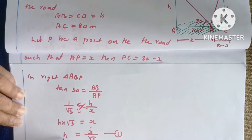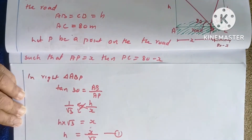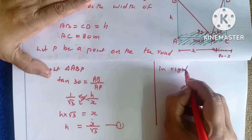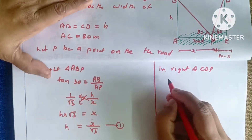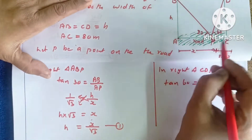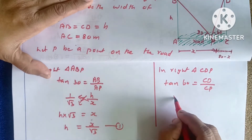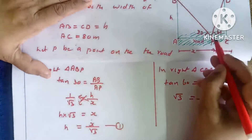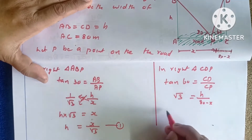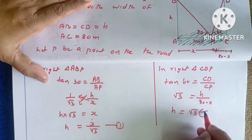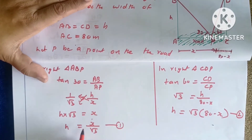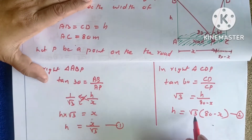In right triangle CDP, tan60 is equal to CD by PC. Cross multiplying, H is equal to root 3 into (80 minus X). That is equation number 2. So equation 1: H equals X divided by root 3, and equation 2: H equals root 3 into (80 minus X).